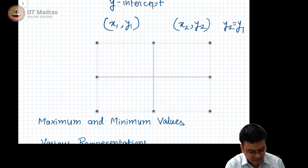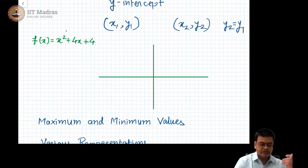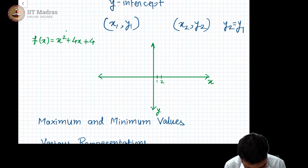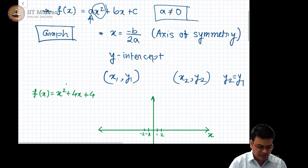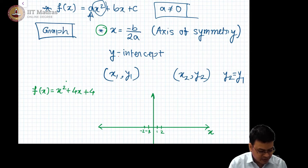Let us take the function f(x) = x² + 4x + 4 and plot it on this graph. This is the x-axis, this is the y-axis. Each unit represents 1 unit in both the horizontal and vertical directions. Let us focus on our cookbook recipe. First, figure out x = −b/2a. In this case, a = 1, b = 4, and c = 4.